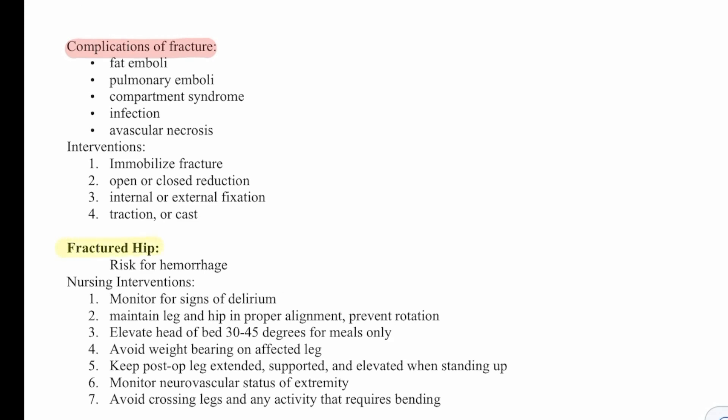Let's talk about a fractured hip. There is a risk for hemorrhage. Nursing interventions: monitor for signs of delirium, maintain leg and hip proper alignment, and prevent rotation. Elevate the head of the bed 30 to 40 degrees for meals only. Avoid weight bearing on the affected leg. Keep the post-op leg extended, supported, and elevated when standing up. Monitor neurovascular status of the extremity, and avoid crossing the legs in any activity that requires bending.